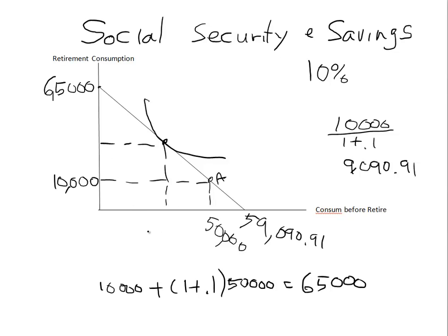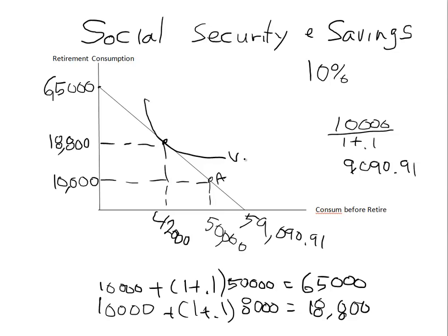Let's assume this person chooses to save $8,000, so they have $42,000 before retirement. If they save the $8,000 at 10% interest, we get the 10,000 we had before plus (1 + 0.1) times the 8,000 they just saved. That's $18,800 up here. The person saved $8,000 and gets $8,800 in principal plus interest. This is an indifference curve - where the person gets the highest level of satisfaction. Let's call it U0.